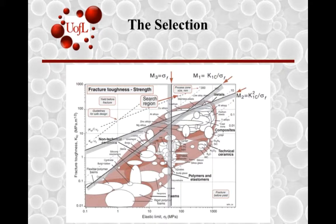The third one is just our yield strength. We end up with a region at the top of the plot where most pressure vessel materials fall. This includes aluminums, stainless steels, and coppers — mostly metals. There are also some plastic alloys used for things like beer containers, but those are not very common. Most of the time, it's metals.